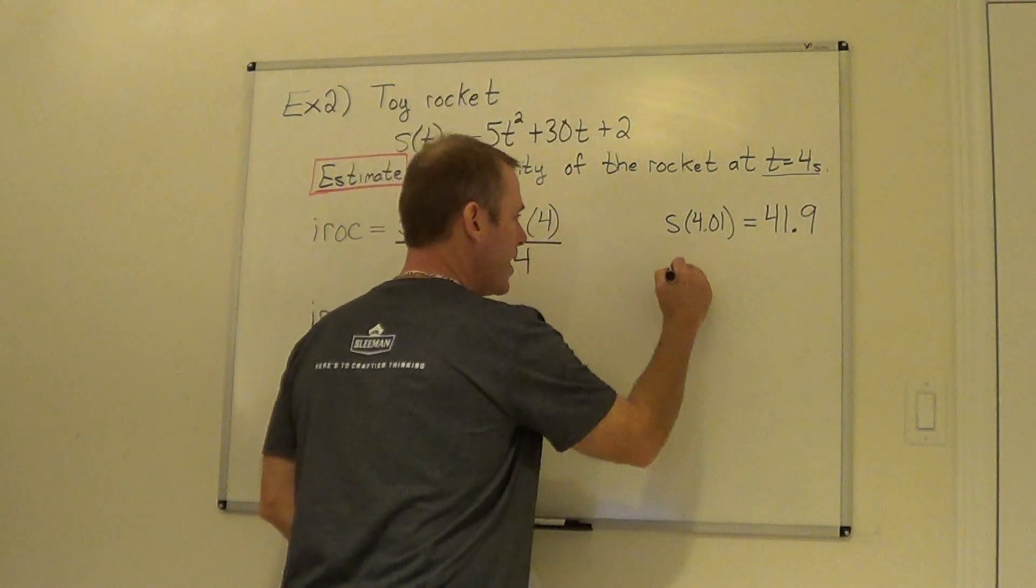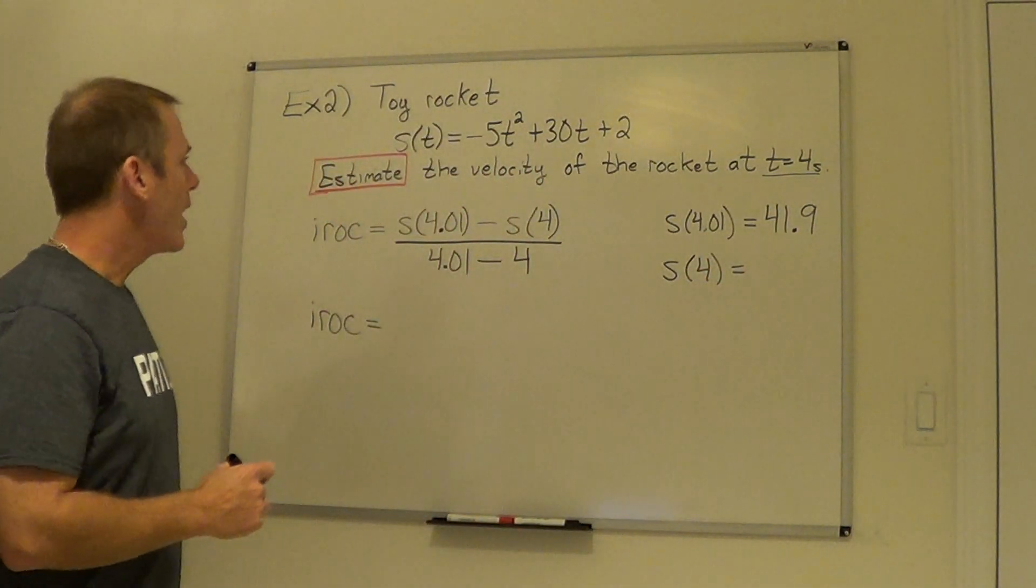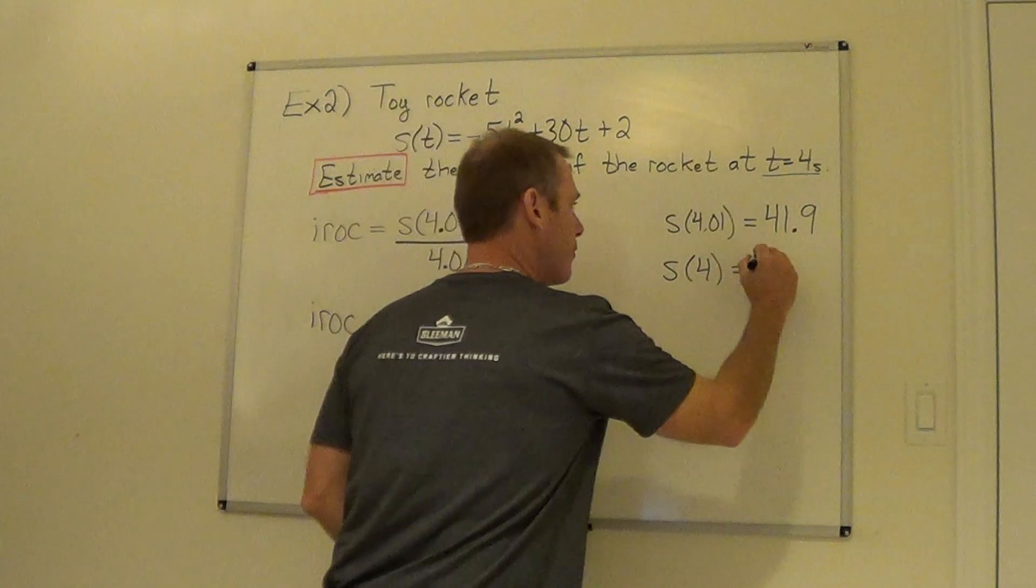You have to redo that but this time in the equation we're going to substitute in a 4 because that's our t value, and I got a nice number of 42.